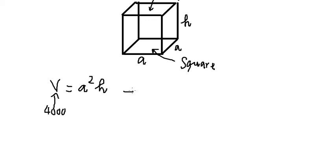So we get h equals 4000 divided by a squared.